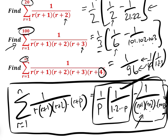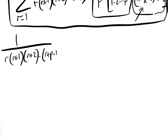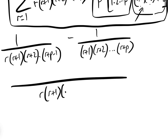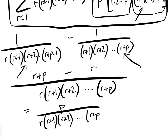So how do we prove this? It's quite simple. If we look at 1 over r(r+1)(r+2)···(r+p) and put the numerator over the same denominator r(r+1)(r+2)···(r+p), we multiply through to get (r+p) minus r in the numerator, which equals p over r(r+1)(r+2)···(r+p).